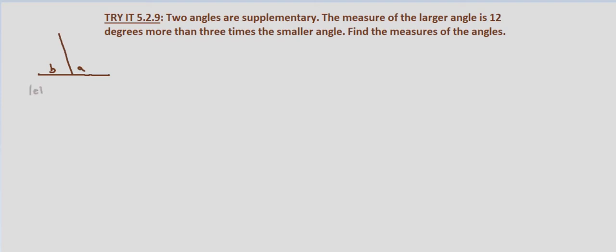So let a equal the measure of the first angle. Let b equal the measure of the second angle. And what are we looking for? We're looking for the measures of both angles.